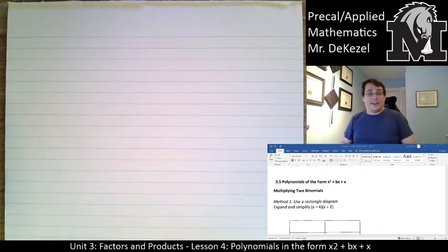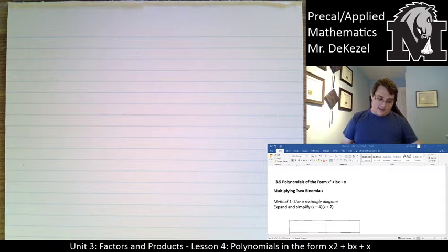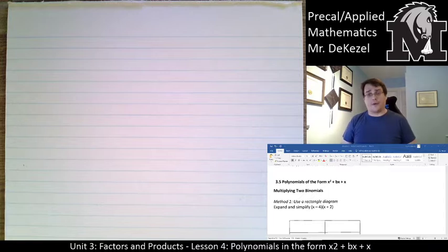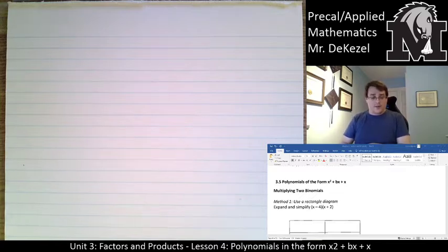Hello everyone, welcome back again to lesson four: polynomials in the form of x squared plus bx plus c. What we're going to do, we're going to take two binomials today and we're going to FOIL them. Maybe that is a familiar term to you, maybe it is not, but you're going to learn what that means.